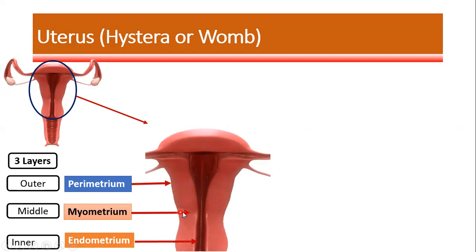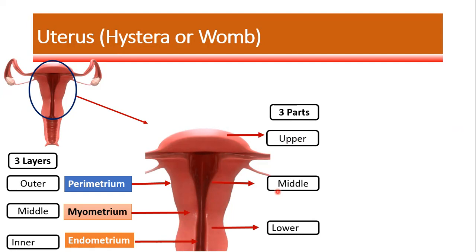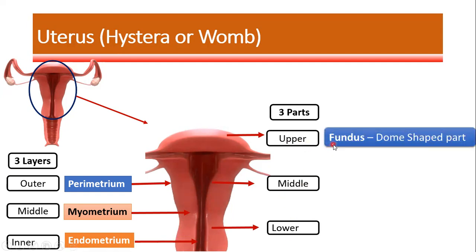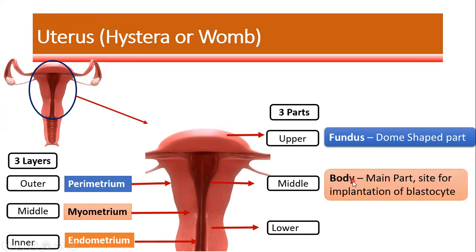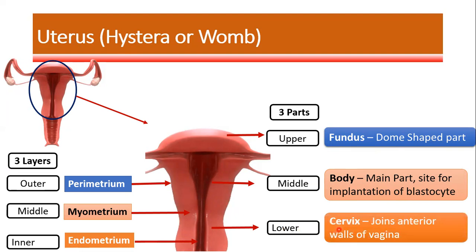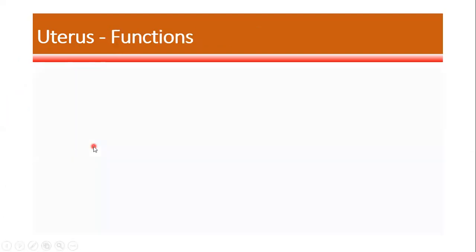Out of the three layers, the myometrium is the thickest layer of the uterus. The uterus is divided into three parts: upper, middle, and lower. The upper part is known as the fundus, which is a dome-shaped part. The middle part is known as the body, which is the main part and the site of implantation for the blastocyte — the baby stays here throughout 37 to 40 weeks of pregnancy. The lower part is known as the cervix, which is directly connected to the vagina.